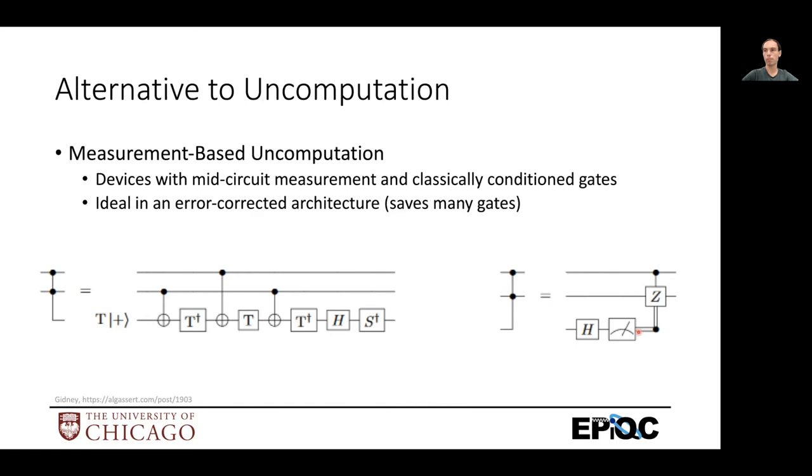And so this is really nice if measurements are easy in your architecture. But current hardware that's available now either can't do mid circuit measurements or the measurements are slow and error prone. So this is actually worse than just running these gates in reverse. However, in error corrected architectures measurement is easy, but T gates are hard as we'll talk about in a few lectures.